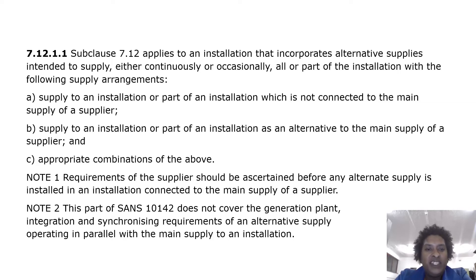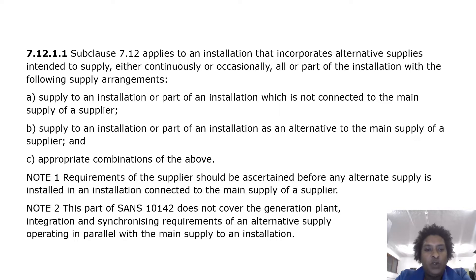Subclause 7.12 applies to an installation that incorporates alternative supplies intended to supply either continuously or occasionally all or part of the installation, with the following supply arrangements: supply to an installation not connected to the main supply of a supplier; supply as an alternative to the main supply; and appropriate combinations of the above. Requirements of the supplier should be ascertained before any alternative supply is installed in an installation connected to the main supply.